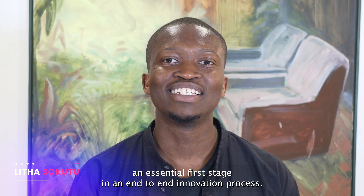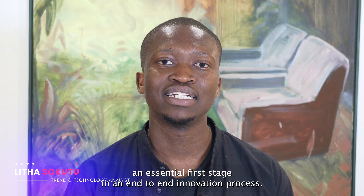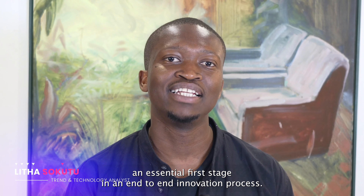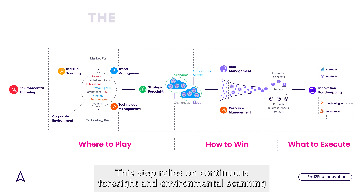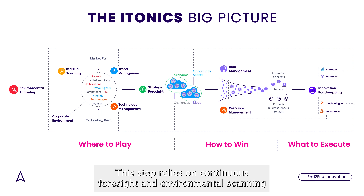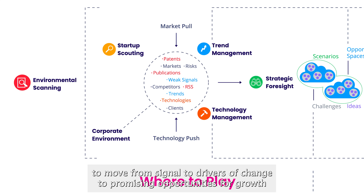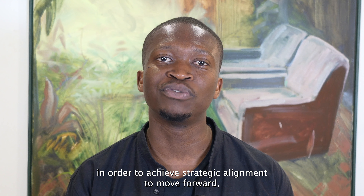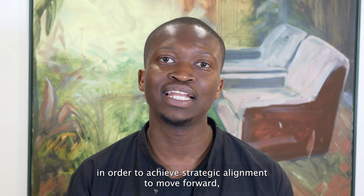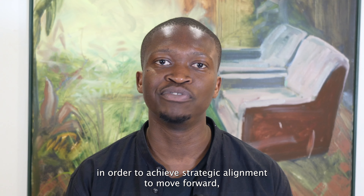Determining where to play is an essential first stage in your end-to-end innovation process. This step relies on continuous foresight and environmental scanning to move from signals, to drivers of change, to promising opportunities for growth in order to achieve strategic alignment to move forward.